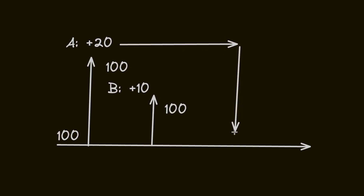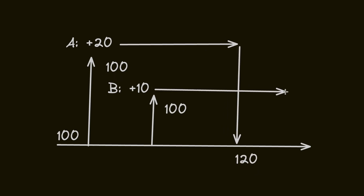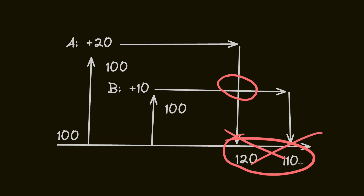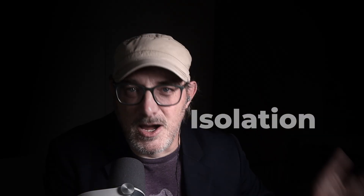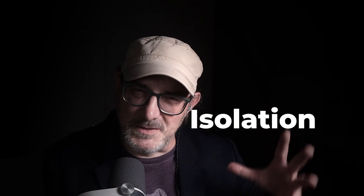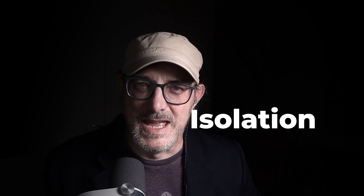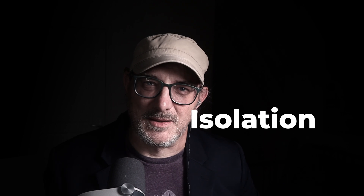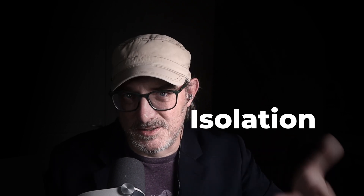Transaction A calculates the sum with $20 more — that's 120 — and writes that to the database. But then transaction B calculates the sum corresponding to $10 more than what it read — that's 110 — and writes that to the database. Because B read the amount before A wrote it, the account is noted as having $110 instead of $130, which it should. Because the two transactions ran at the same time, the end result was wrong. Isolation prevents transactions from interfering with each other — each transaction takes its turn.